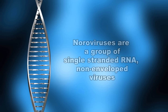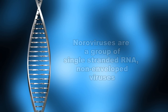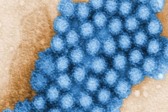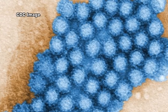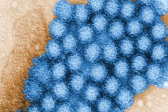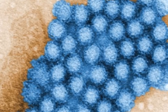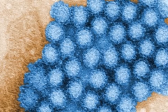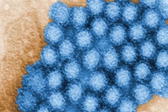Noroviruses are a group of related, single-stranded RNA, non-enveloped viruses that cause acute gastroenteritis in humans. Norovirus is the official genus name for the group of viruses previously described as Norwalk-like viruses, or small, rounded, structured viruses, because of their morphologic features.